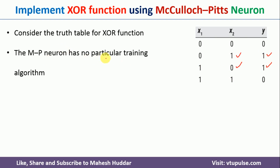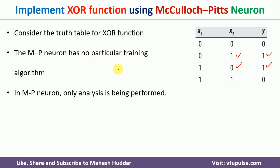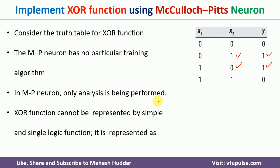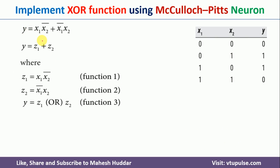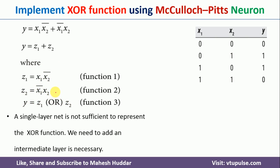MP Neuron has no particular training algorithm, so we need to do some analysis and find the optimal weights so that we can fire the output only when those two conditions are satisfied. XOR function cannot be implemented with a simple logic function because it is a non-linearly separable logic function. Hence, we use the equation: Y = X1·X2̄ + X1̄·X2, which is divided as Y = Z1 + Z2, where Z1 = X1·X2̄ and Z2 = X1̄·X2.